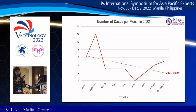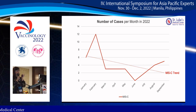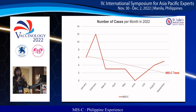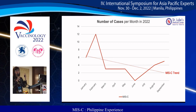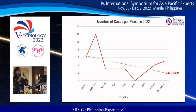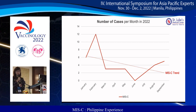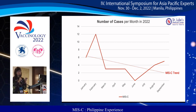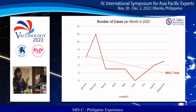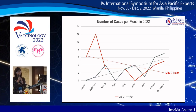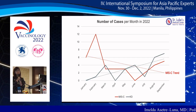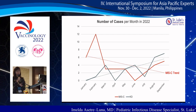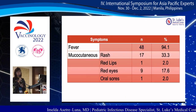After the February 2022 peak, there was a lull from March to June with very few cases, and in August we are seeing again an upward trend of MIS-C cases. The peak number of Kawasaki disease cases also follows that of MIS-C cases.